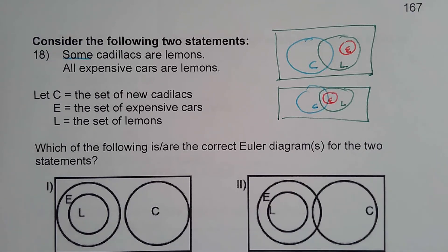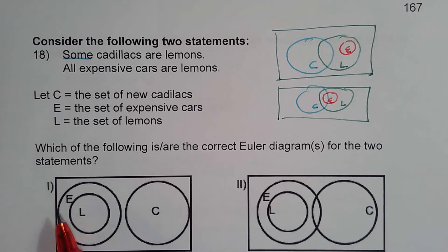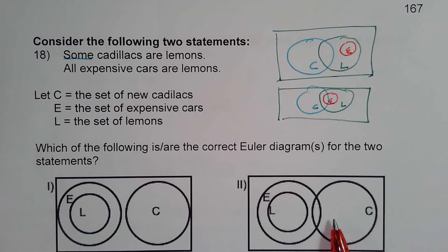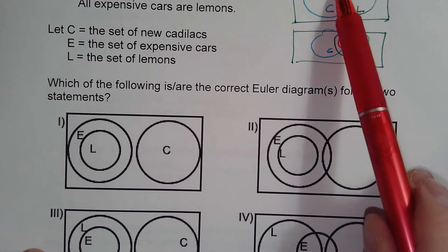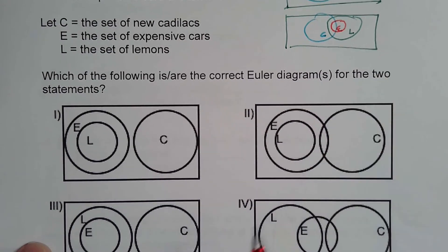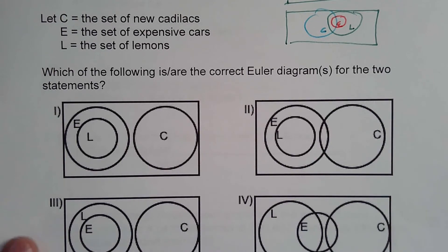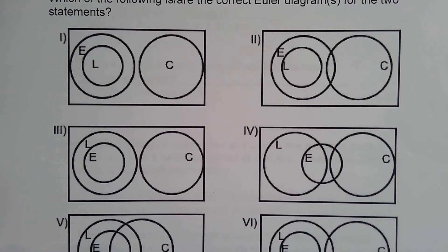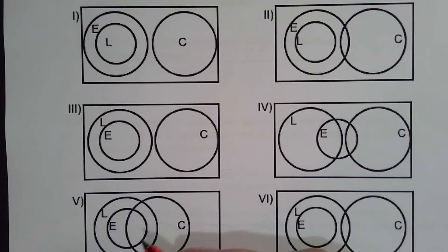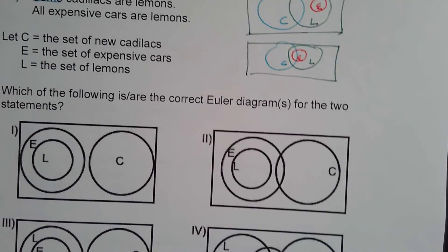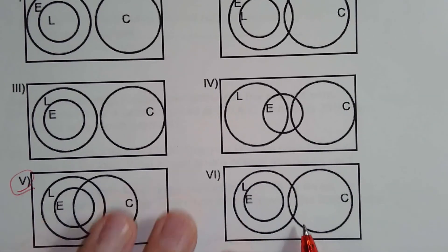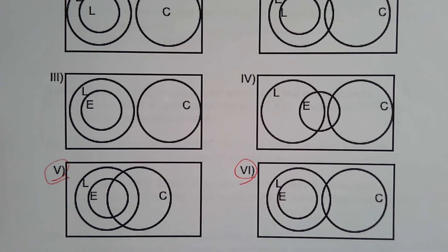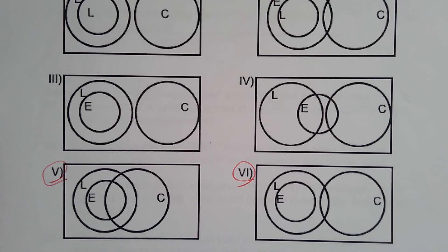Looking at the diagrams: E inside L eliminates diagrams 1 and 2. L also has to intersect C, which eliminates 3 and 4. Diagram 5 has E inside L and L overlapping C — that matches one possibility. Diagram 6 has E inside L and L overlapping C as well — that matches the other possibility. So diagrams 5 and 6 are both valid Euler diagrams for those statements.